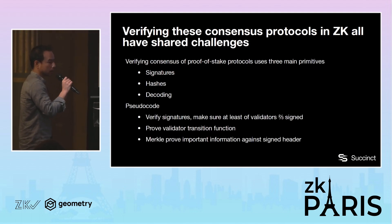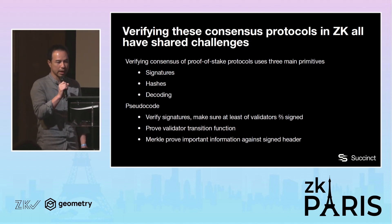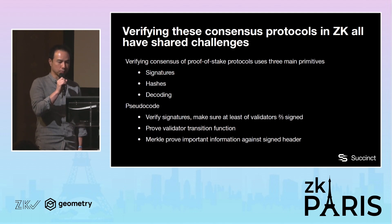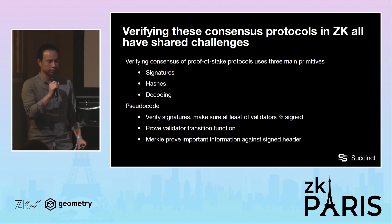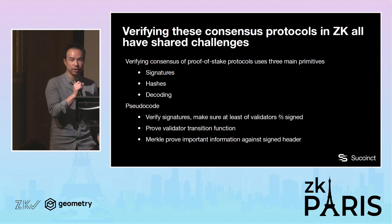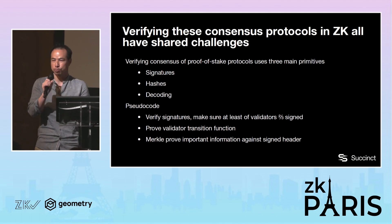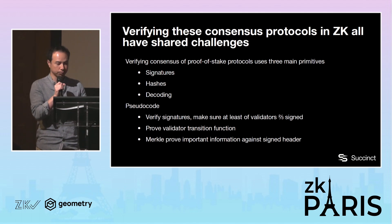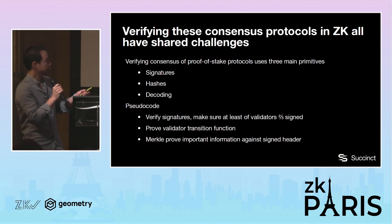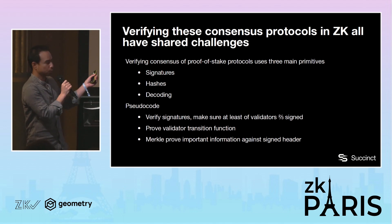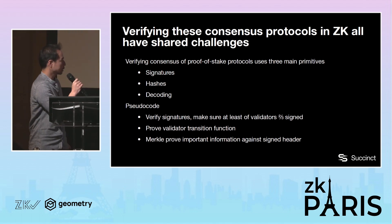All of these consensus protocols have very similar parameters they have to deal with. One of them is, obviously, verifying signatures. Another is calculating hashes of block headers, and then decoding individual fields within the header. The general pseudocode for all these consensus verification algorithms is: verifying the signature and making sure that at least a quorum — like two-thirds of the validators — have signed; proving the validator transition function; and generally doing Merkle proofs to prove committed data within the header.